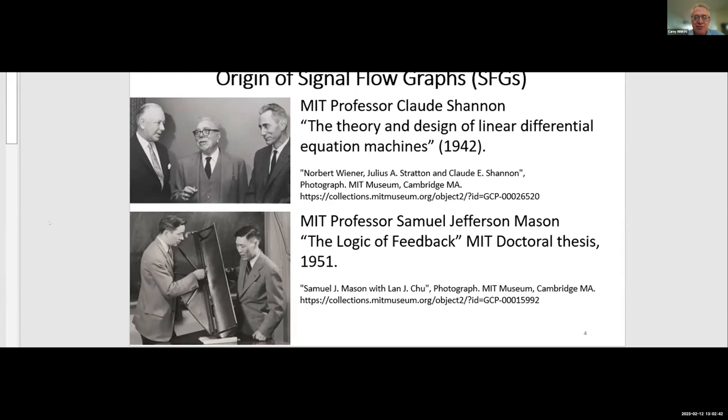Samuel Mason's name is associated with signal flow graphs and the rules for obtaining transfer functions. But interesting, the original developer of signal flow graphs was Claude Shannon, in his theory and design of linear differential equation machines. And due to the war, this was classified. So Shannon didn't receive credit for that. And this is an example of Stigler's law of eponymy, that no mathematical or scientific discovery is named after its discoverer. Stigler was a former University of Chicago math professor and true to form, Stigler's law of eponymy is itself an example, as he acknowledges the law was originally proposed by someone else. And there you see Shannon next to Norbert Wiener and also Mason.